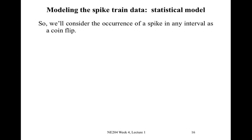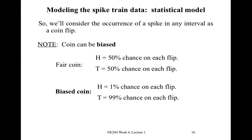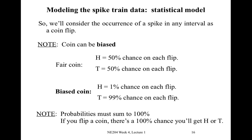We can think of the occurrence of a spike in any interval as a coin flip, and this coin can be biased. For a fair coin, the outcome is heads or tails with a 50-50 chance. For a biased coin, the chance of heads on each flip might be 1% while the chance of tails is 99%. Those probabilities must sum to 100%, since flipping a coin must yield either heads or tails.